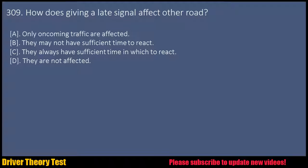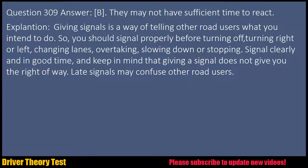Question 309: How does giving a late signal affect other road users? a. Only oncoming traffic are affected. b. They may not have sufficient time to react. c. They always have sufficient time in which to react. d. They are not affected. Question 309 Answer: B. They may not have sufficient time to react.